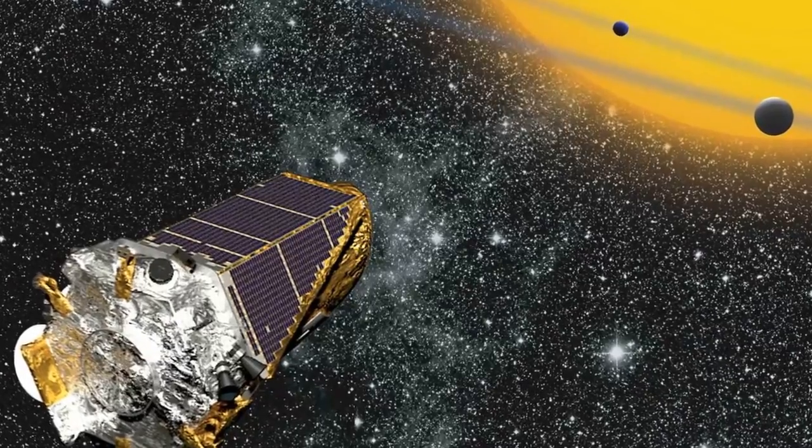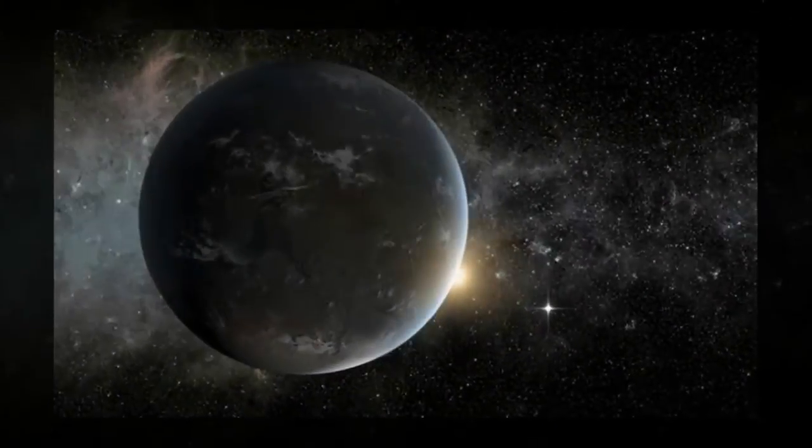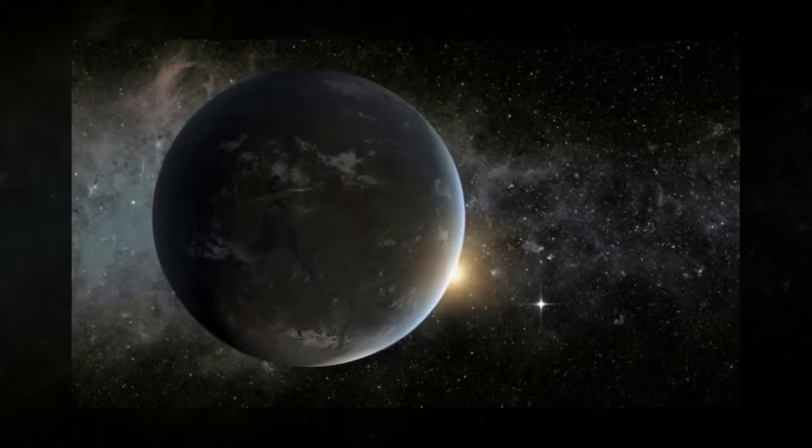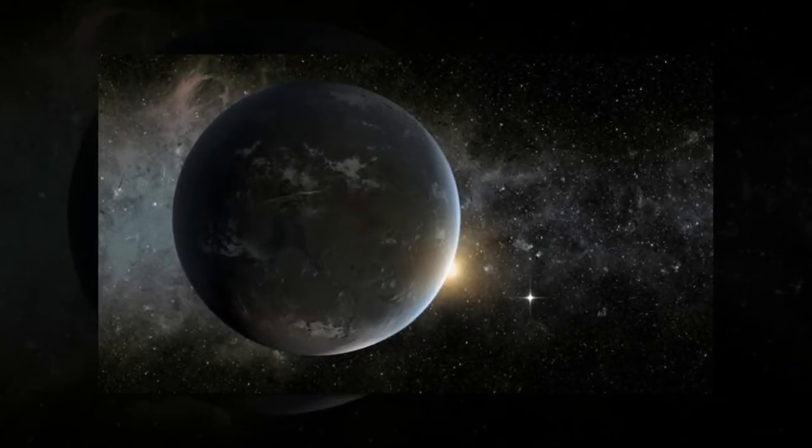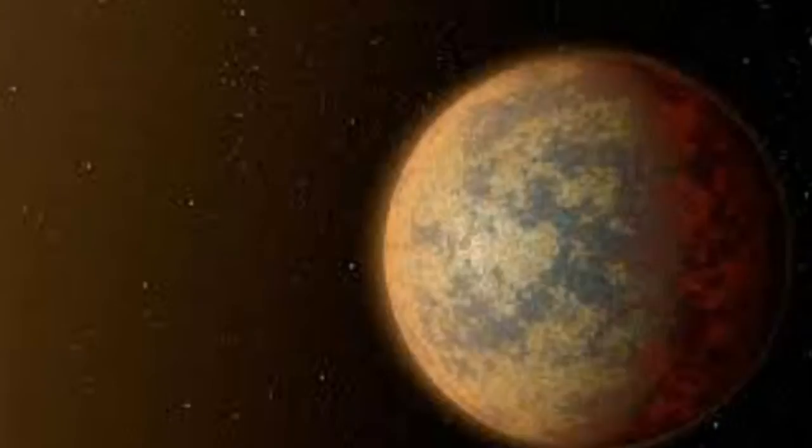A circumbinary planet orbits two stars, and like the fictional planet Tatooine from Star Wars, this planet has two suns in its sky. The discovery marks an important milestone and comes only four years after the first Kepler circumbinary planet was detected.